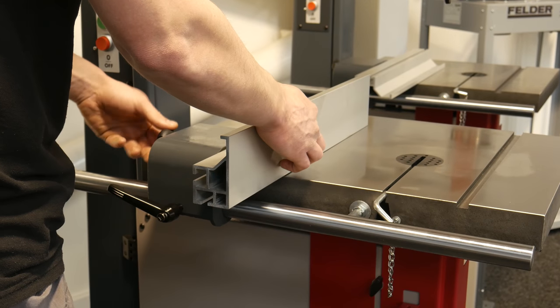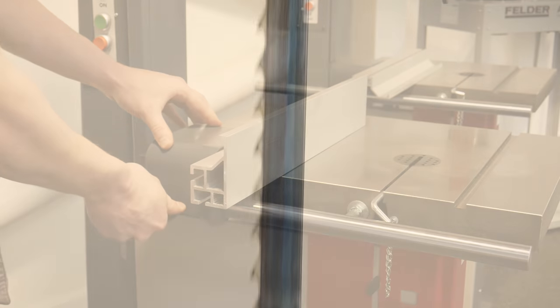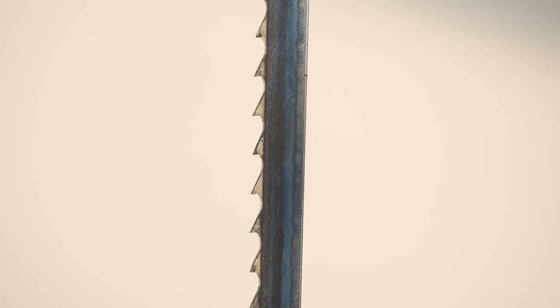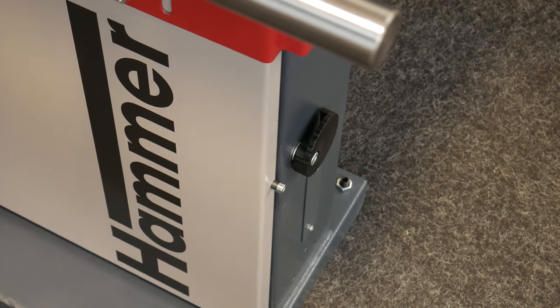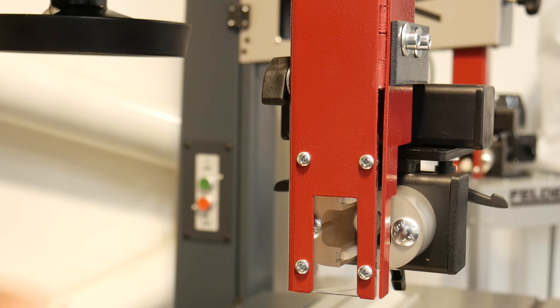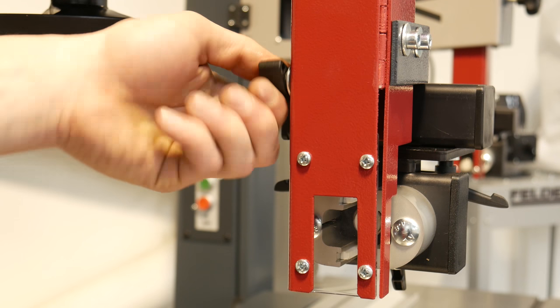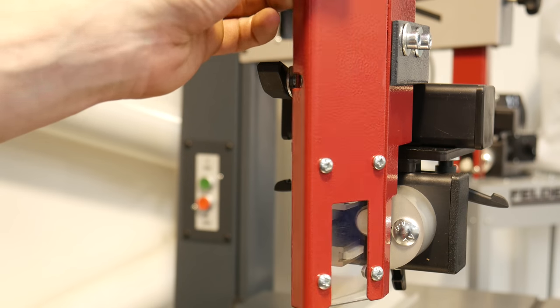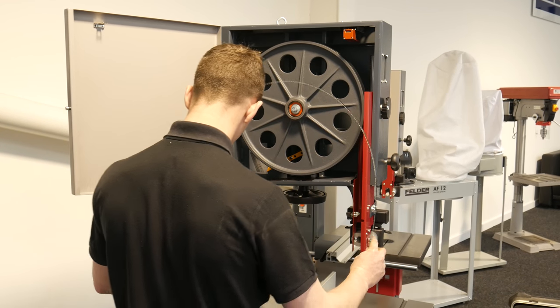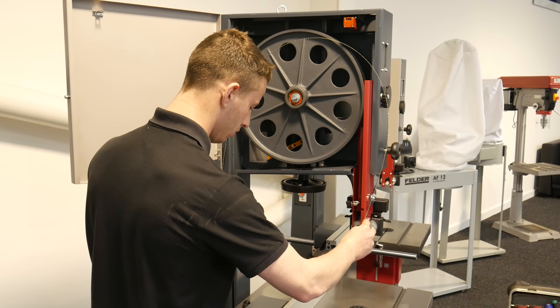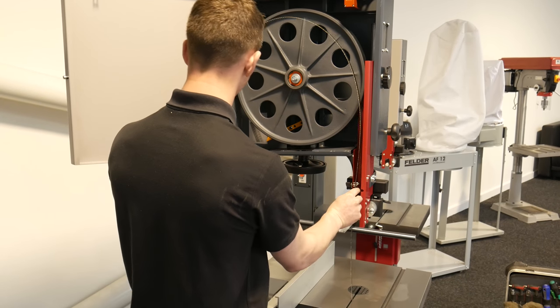To fit the bandsaw blade, first unlock the two latches at the top and bottom of the machine to open the wheel doors. Next, loosen the thumb screw to open the safety guard as shown. Carefully take the bandsaw blade and fit it over the upper and lower wheels with the saw blade edge facing towards you.